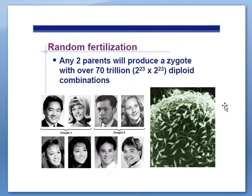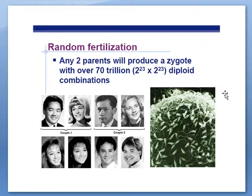Since you have two sources of genetic information, that's 2 to the 23rd times 2 to the 23rd power — a total of 70 trillion possibilities. You're not one in a million; you're one in 70 trillion.